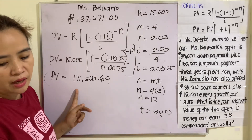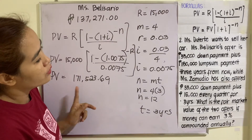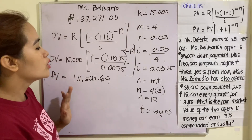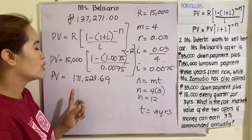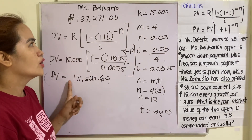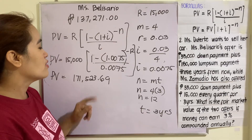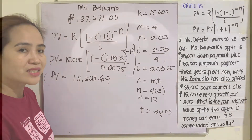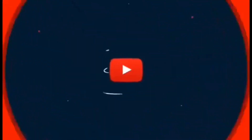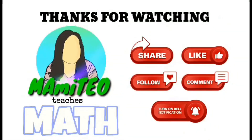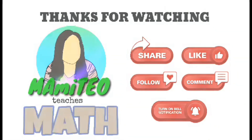Miss Zamudio's offer of 171,523.69 is higher than Miss Belisario's offer of 137,271.00. Therefore, if you were Miss Tete, you would choose Miss Zamudio's offer because it is the higher fair market value.